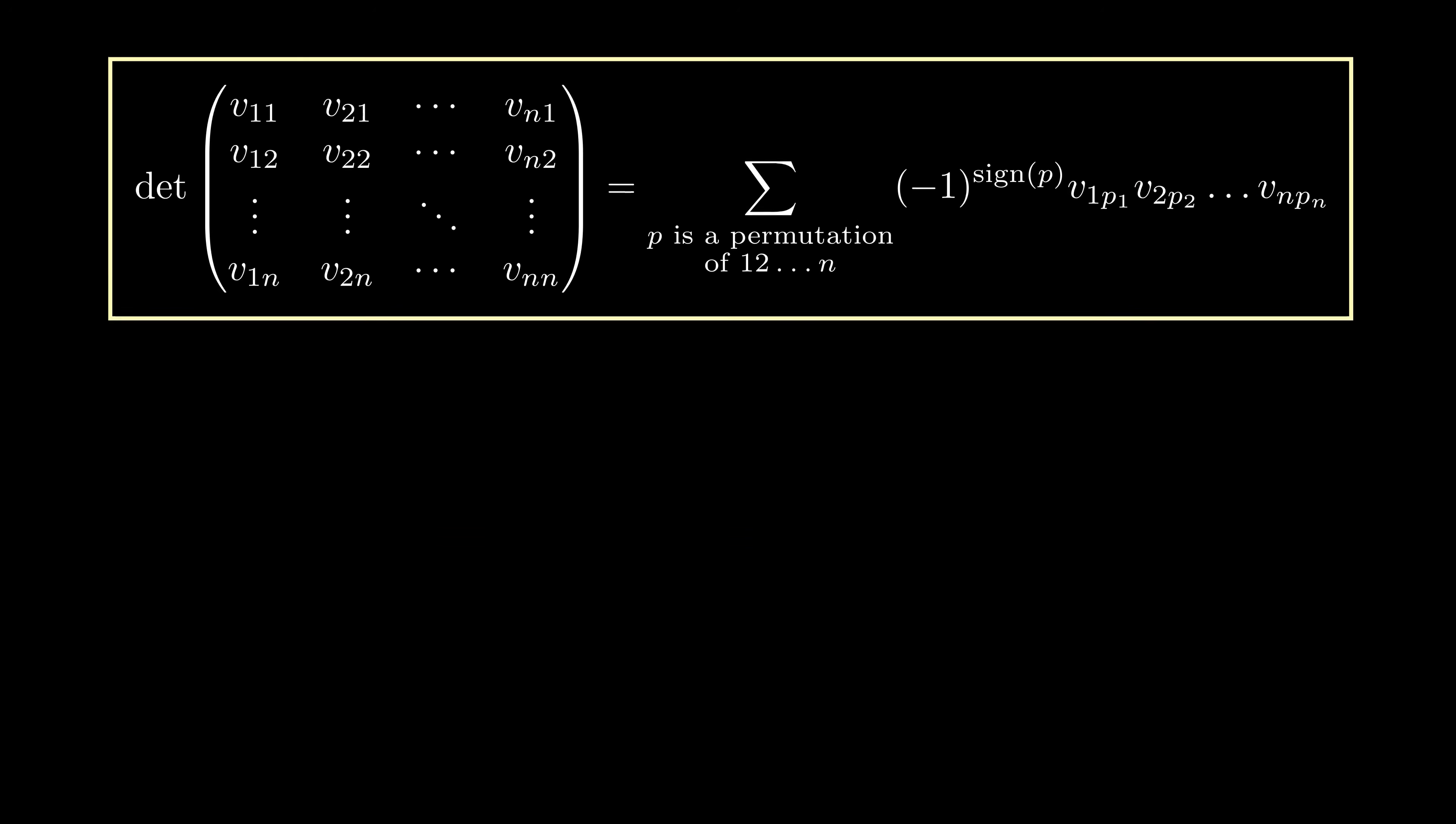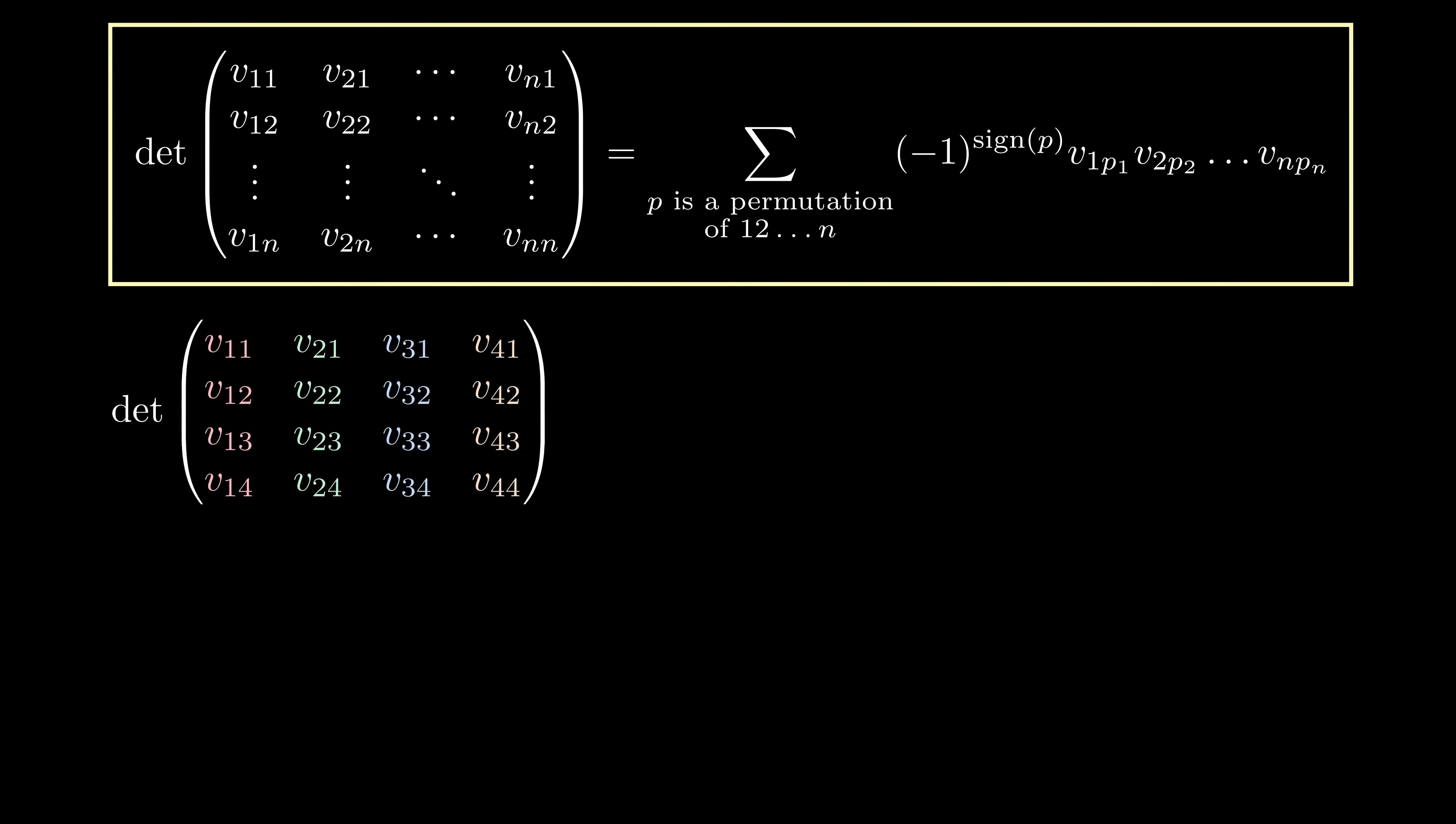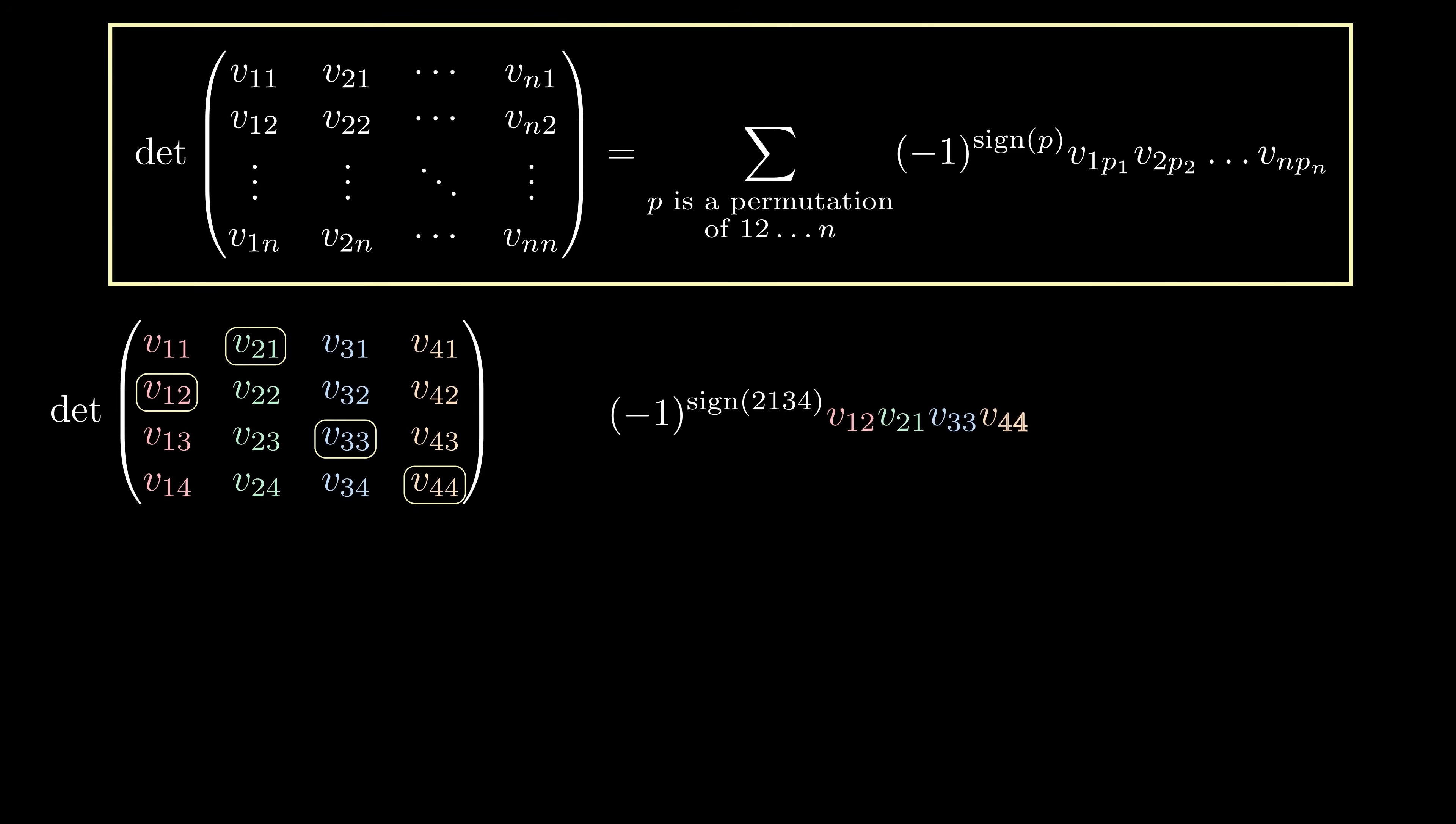Let's look at how this formula works in practice. When n equals 4, there are 4 factorial, or 24 terms, in the sum. Each term corresponds to some permutation, which on a matrix looks like a choice of exactly one entry in each row and column.